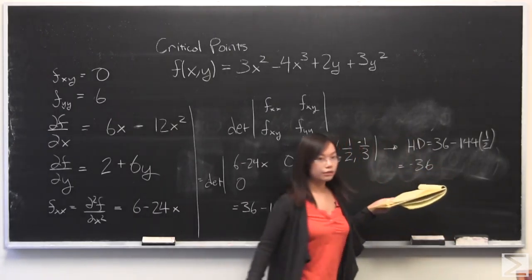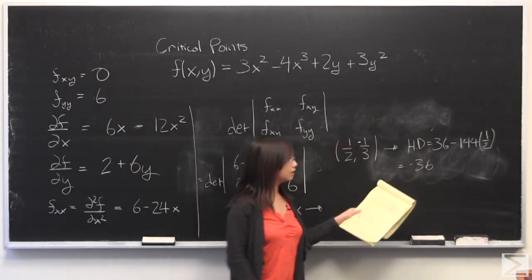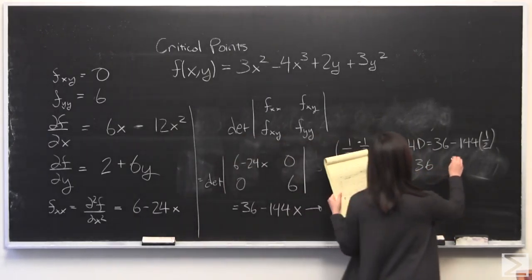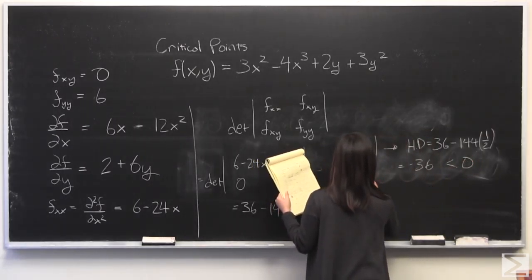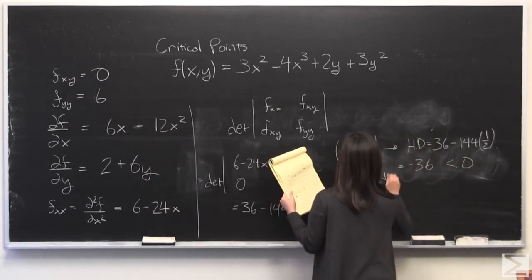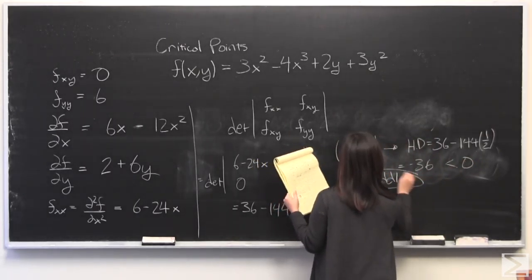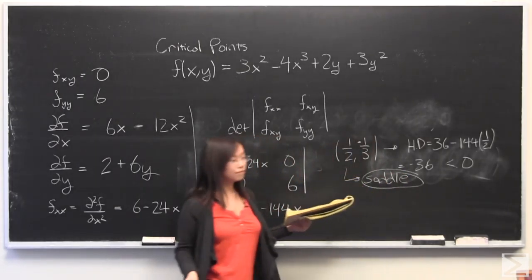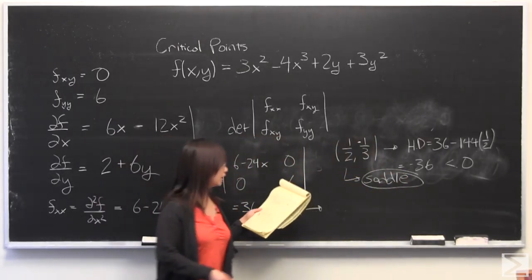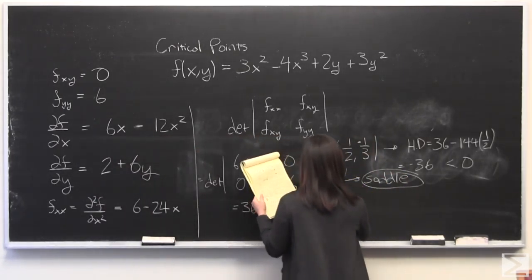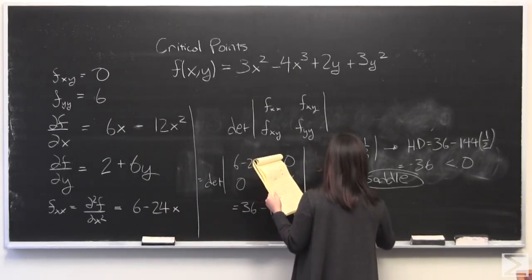I'm going to start with the critical point (1/2, -1/3). If you plug in that x value of 1/2, you will get negative 36. Since that is less than 0, that would make this a saddle point.